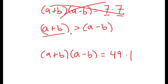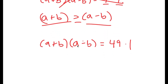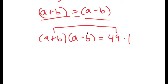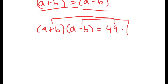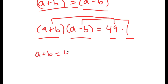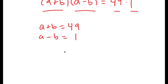So going back to a plus b times a minus b equals 49 times 1 — because a plus b is greater than a minus b, we can say that a plus b equals 49 and a minus b equals 1, since 1 is less than 49. Notice this equals a number times another number, so we have a system of equations, and I'm going to add these equations together.